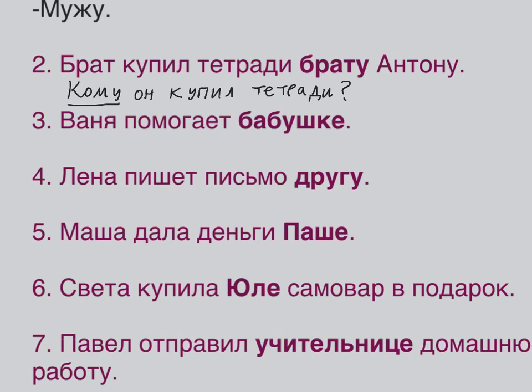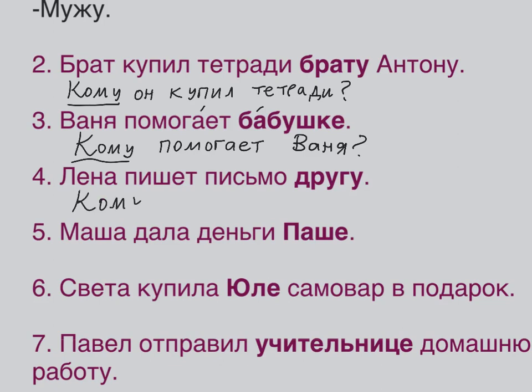Number 3: ВАНЯ ПОМОГАЕТ БАБУШКЕ — Vanya helps grandma. Question: КОМУ ПОМОГАЕТ ВАНЯ? Answer: БАБУШКЕ. Number 4: ЛЕНА ПИШЕТ ПИСЬМО ДРУГУ — Lena is writing a letter to a friend. КОМУ ПИШЕТ ЛЕНА? If you see any name or person, it's going to be кому.